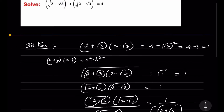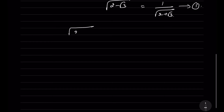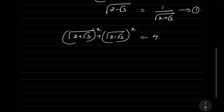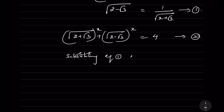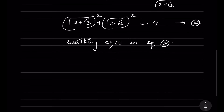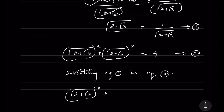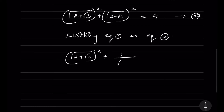So now here is the given problem: (√(2+√3))^x + (√(2-√3))^x = 4. This is equation 2. Substituting equation 1 into equation 2, we get (√(2+√3))^x + (1/√(2+√3))^x = 4.